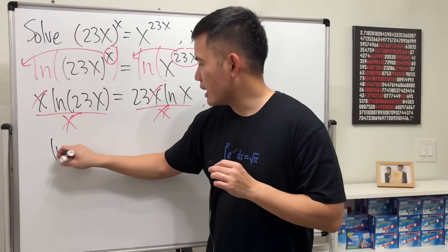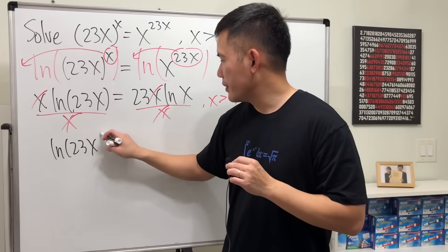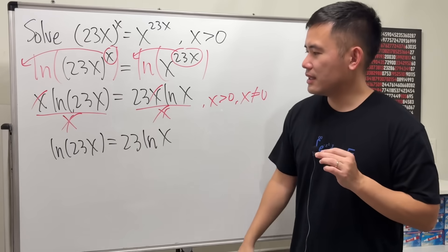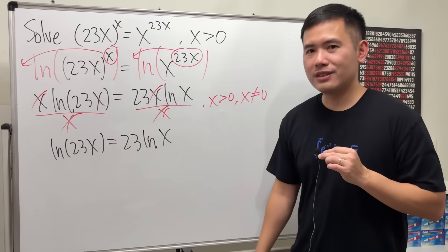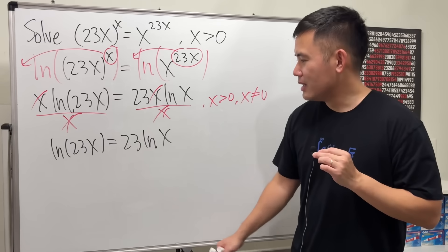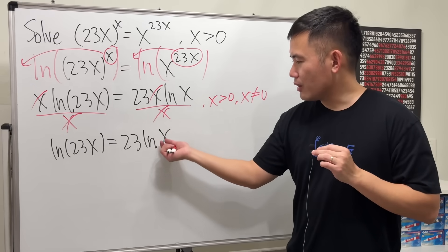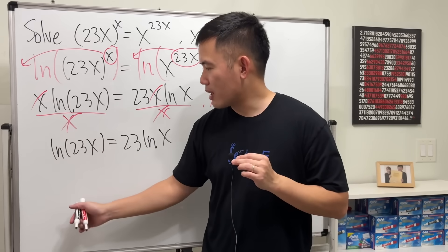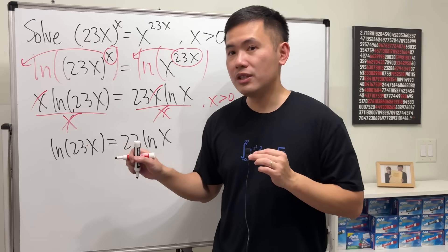And we are looking at ln(23x) = 23ln(x). What do we do next? Well, here I think we can use the property of log again, right? Because this is ln(23x), we can break it apart if it's a multiplication inside.